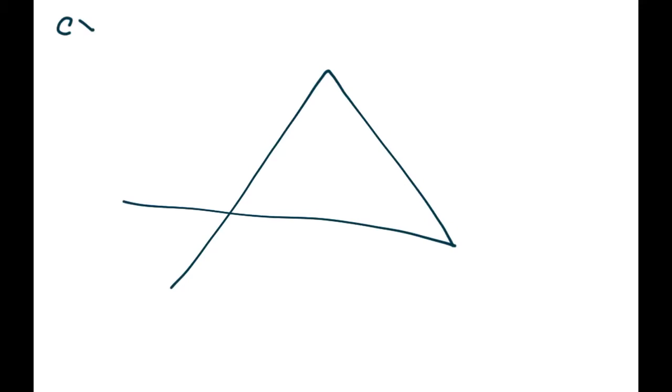Okay, so let's suppose that was our triangle. We know that this angle here is 110. And this angle over here is 35. And the question is, what is angle X? Okay, so in this case,